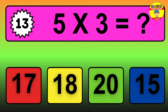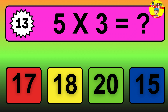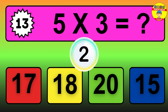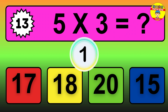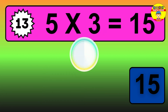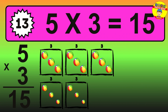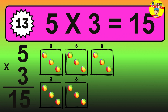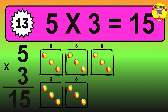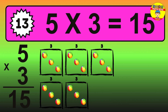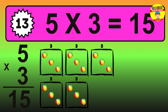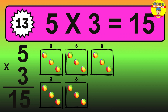Question 13. 5 times 3 equals what? The answer is 5 times 3 is 15. To calculate, we have 5 groups with 3 balls each one. So how many balls do we have? 15 balls.